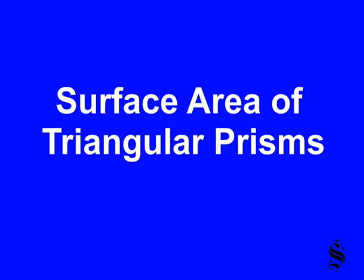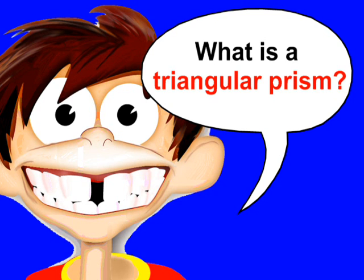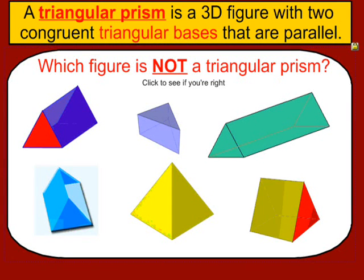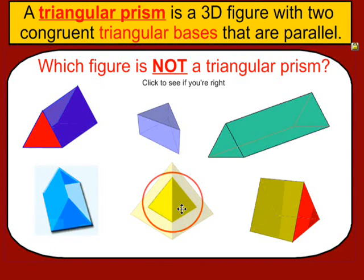Surface area of triangular prisms. So what is a triangular prism? A triangular prism is a 3D figure with two congruent triangular bases that are also parallel. Here we have one shape that is not a triangular prism — that would be a pyramid, which has just one base. A triangular prism has two triangular bases that are parallel and congruent.